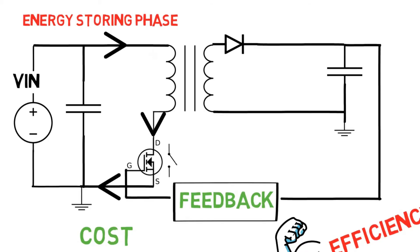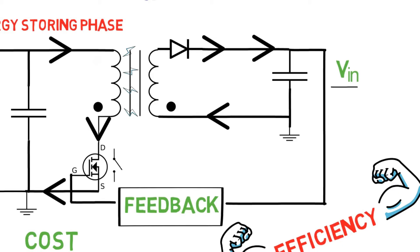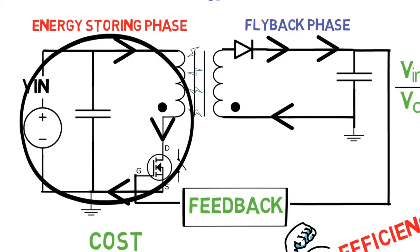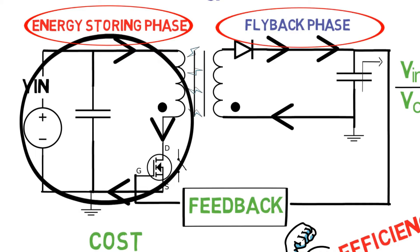When the transistor is turned off, the polarity of the inductor — that is, the primary side of the transformer — gets reversed, and voltage gets induced in the secondary side of the transformer due to electromagnetic induction. The diode gets forward biased, and the magnitude of the induced voltage is given by the turns ratio: Vin / Vo = Np / Ns. This is known as the flyback phase. The primary side is fully off, voltage is delivered to the output capacitor and it gets charged. In the next energy storing phase, the output capacitor delivers voltage to the load. These cycles repeat and we get regulated DC output voltage.